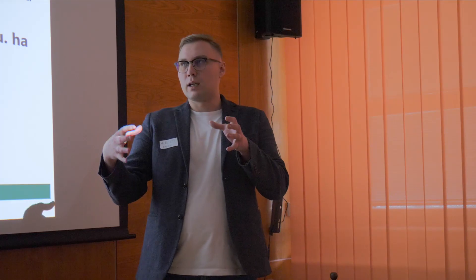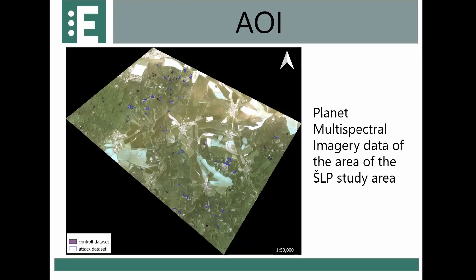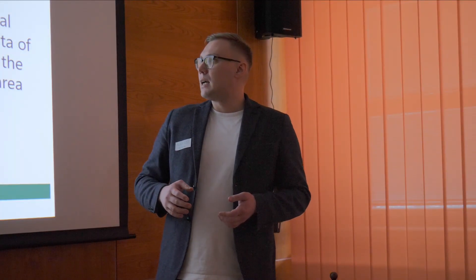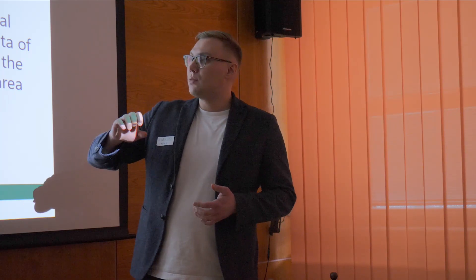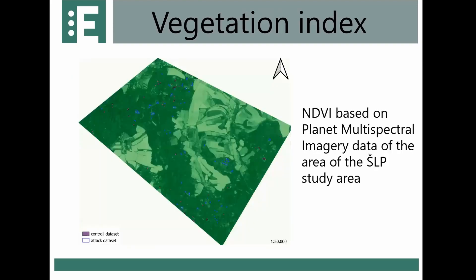Our research area was focused on the larger landscape rather than single tree stands. We had an inventory layer that helped define age structure and tree species structure, and we used Planet imagery at 3-meter resolution. Our year of focus was 2020, and we were limited to four bands. We used 24 vegetation indices, and here you can see example outputs for the area, including defined control and attack datasets.